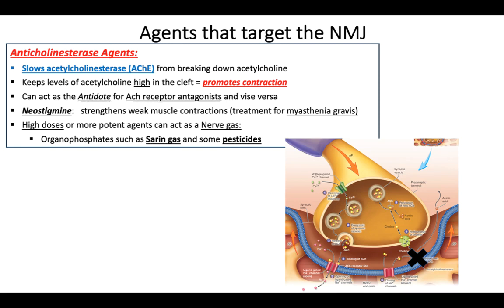So if you've got something that does the opposite of something else, they're antidotes for one another. If you're ever shot with one of those poison darts, you could theoretically use one of these as an antidote, because it'll reverse the effect of the receptor blockers.